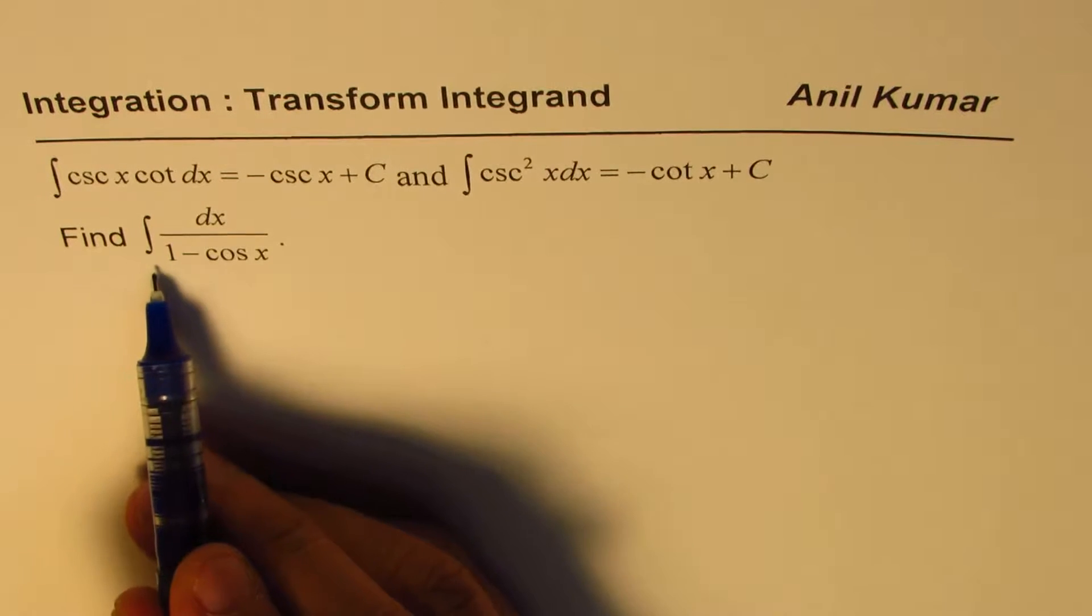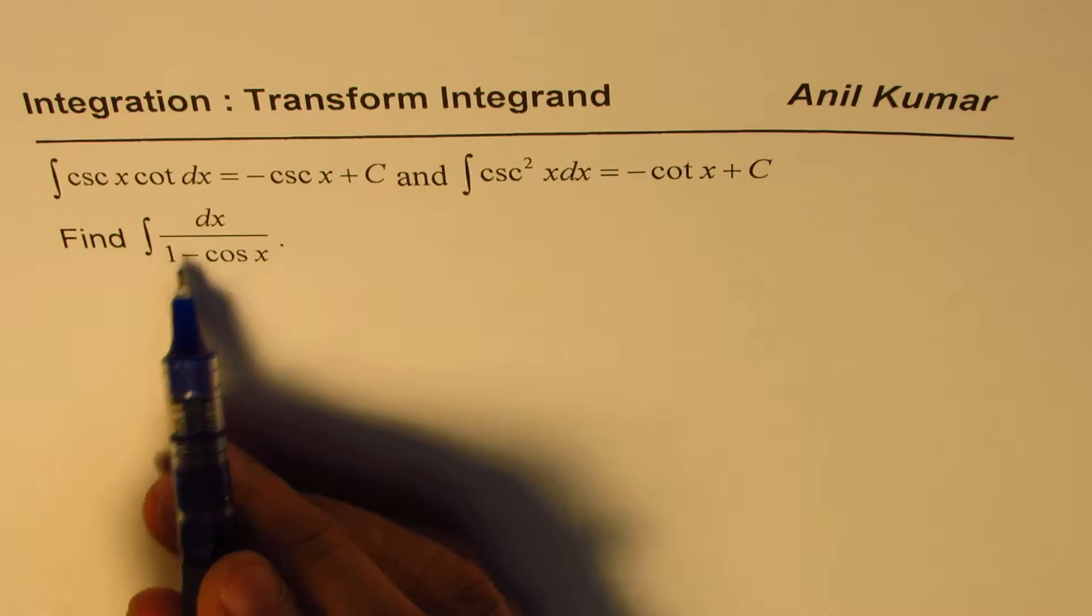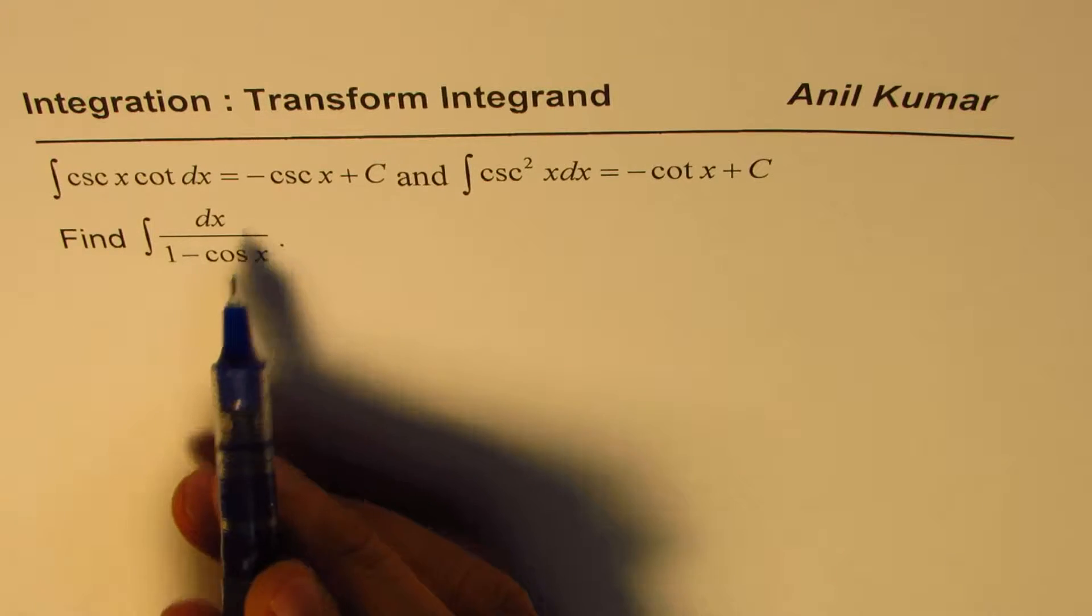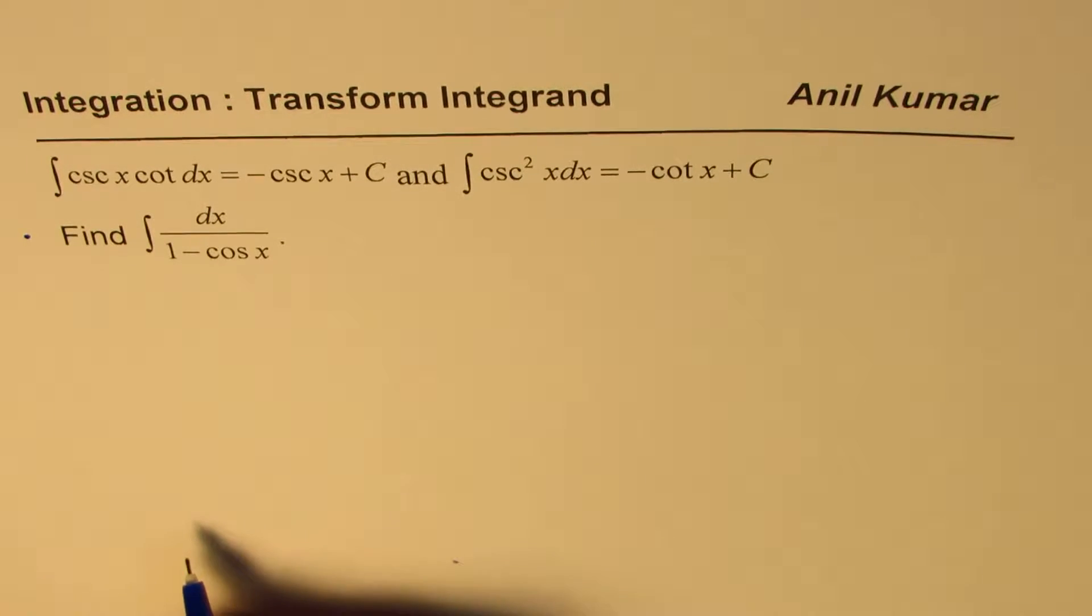We need to find integral 1 over 1 minus cos x dx, right? So that's the question for you. You can pause the video, answer the question, and then look into my suggestions.